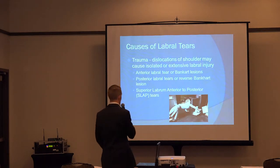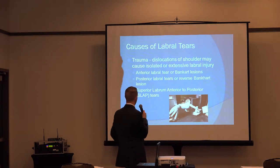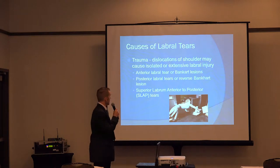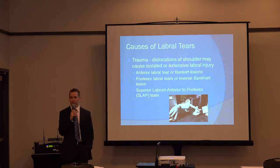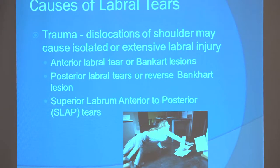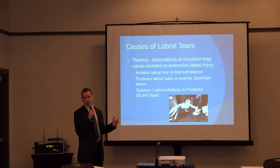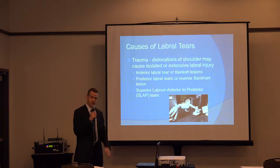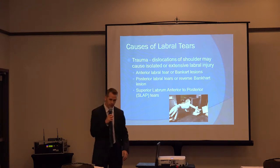There are three major causes of labral tears. The first is trauma — with dislocations of the shoulder that can cause significant labral damage. Typically we see a pattern of either anterior or posterior instability. It can be anterior labral tears, posterior labral tears or SLAP tears, or oftentimes actually a combination of these tears where we can see circumferential tears around the entire glenoid.